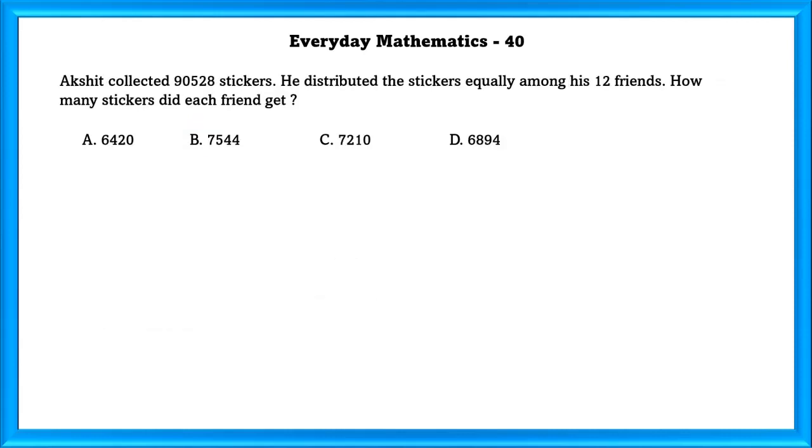Everyday Mathematics Question Number 40: Akshit collected 90,528 stickers. He distributed the stickers equally among his 12 friends. How many stickers did each friend get?